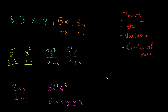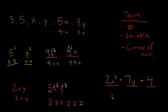So if I gave you a problem like 2x cubed plus 7y plus 4, and I asked you how many terms do we have — well, 2x cubed is one term, 7y is also one term, and 4 is also one term. So we have 3 total terms. 2x cubed is a combination of multiplying a constant and a variable. 7y is a combination of multiplying a number and a variable. And 4 is just a number — a constant by itself.